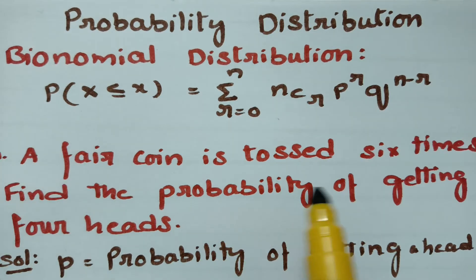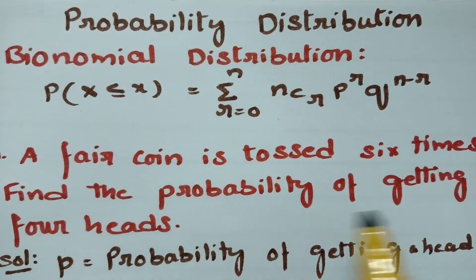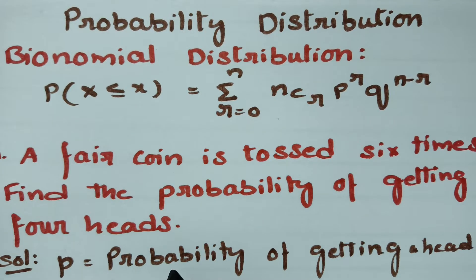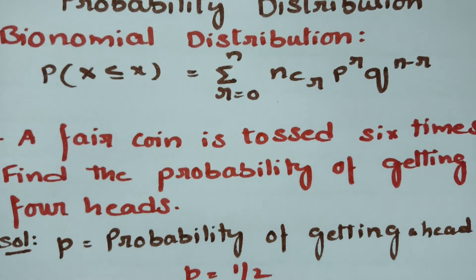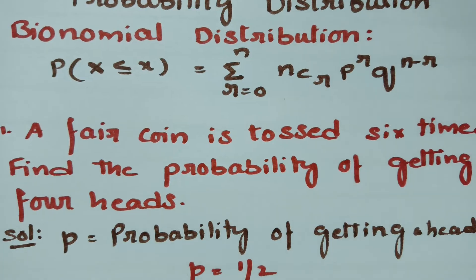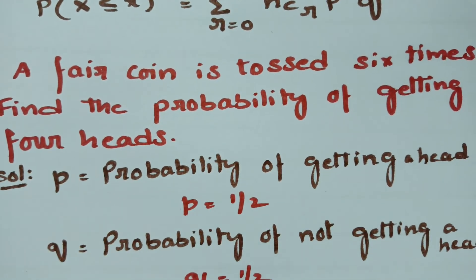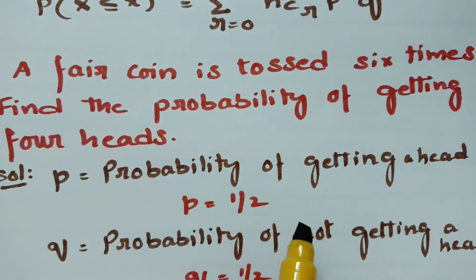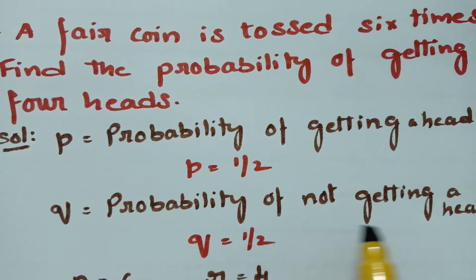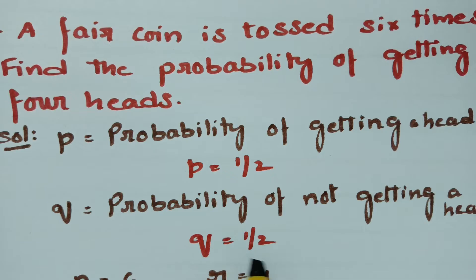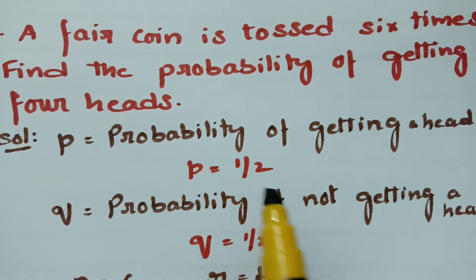A fair coin is tossed 6 times. Find the probability of getting 4 heads. From this question, small p is equal to the probability of getting a head. The chances of getting a head when a fair coin is tossed is 1/2, and the probability of not getting a head is q, which is also 1/2.